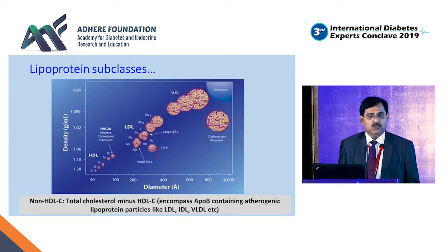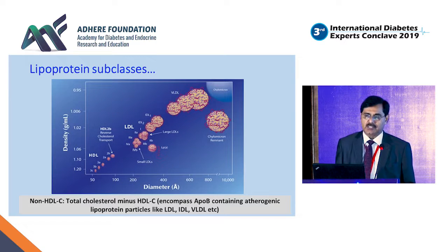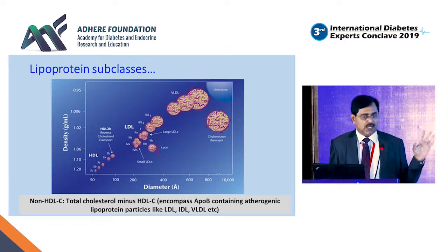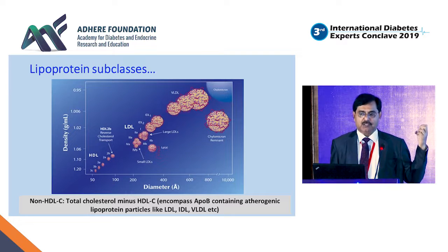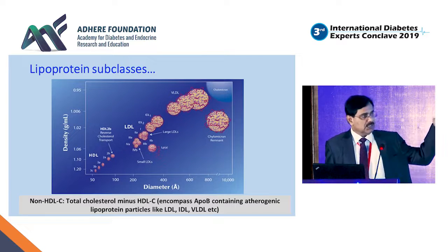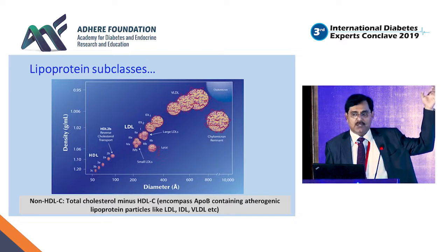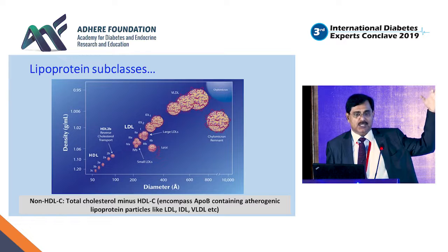When you look at the individual fractions of the lipid panel, on the x-axis what you see is the increasing size of these particles. On the y-axis it is in the reverse order — the more dense a particle, it's at the bottom. So the numbers are in reverse order, decreasing upward.